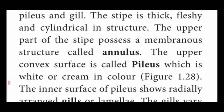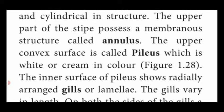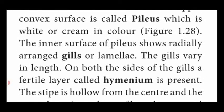The inner surface of the pileus shows radially divided chambers known as gills or lamellae. The length of the gills varies depending upon the biconcave structure of the pileus. On both sides of the gills there is a fertile layer called hymenium.